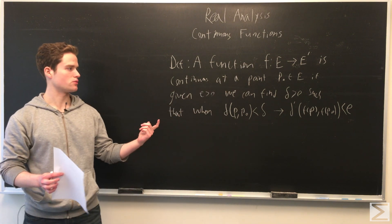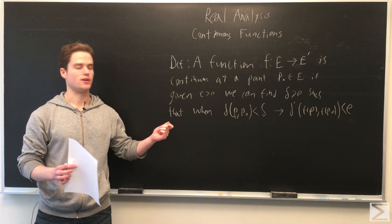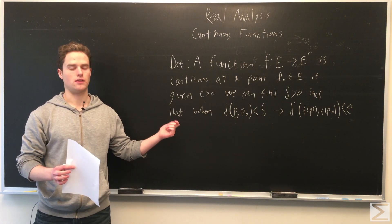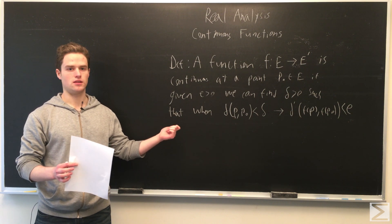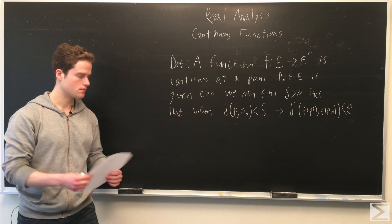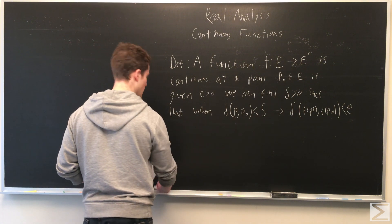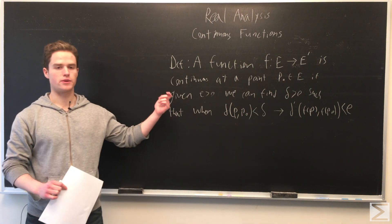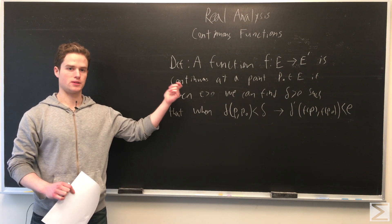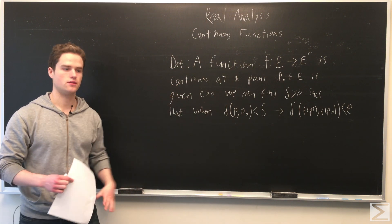So we can get as close as we want to points in E prime as we get closer to points in E. And we say F is continuous on the metric space E if it's continuous at all the points of E.